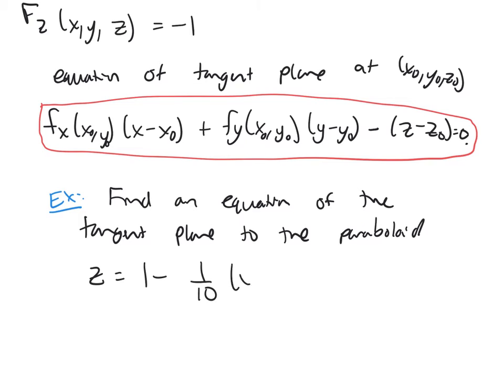I want to find an equation of the tangent plane to the paraboloid z equals 1 minus 1/10 times (x squared plus 4y squared) at the point (1, 1, 1/2).